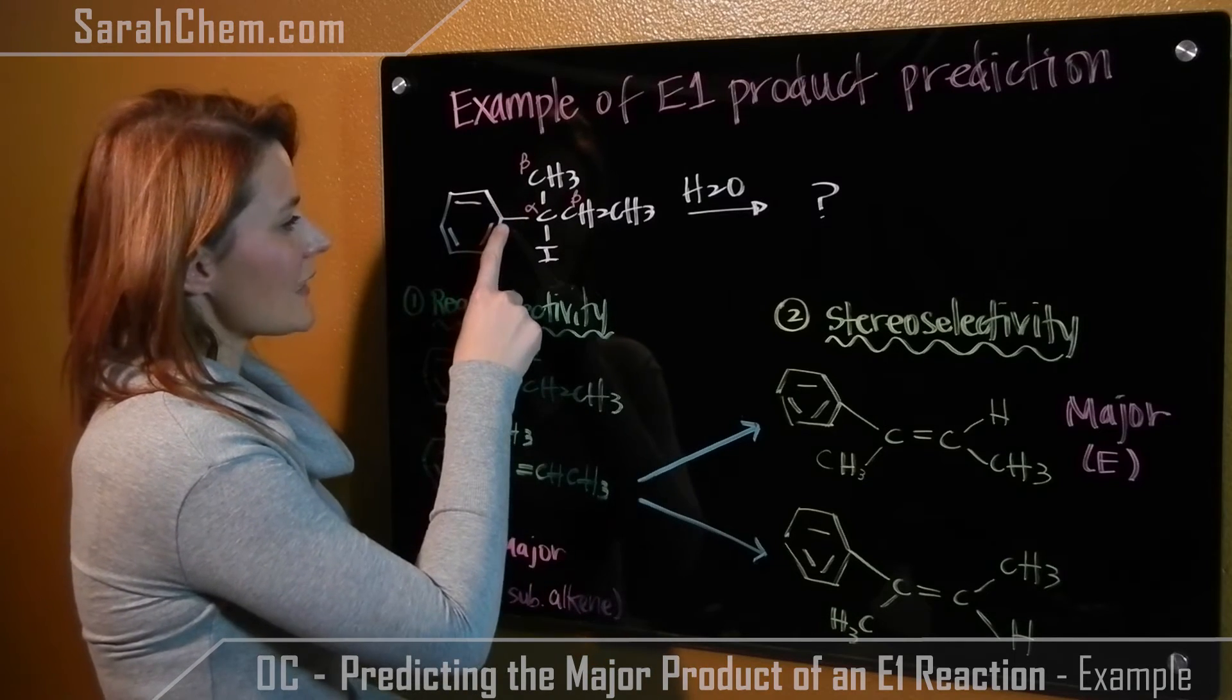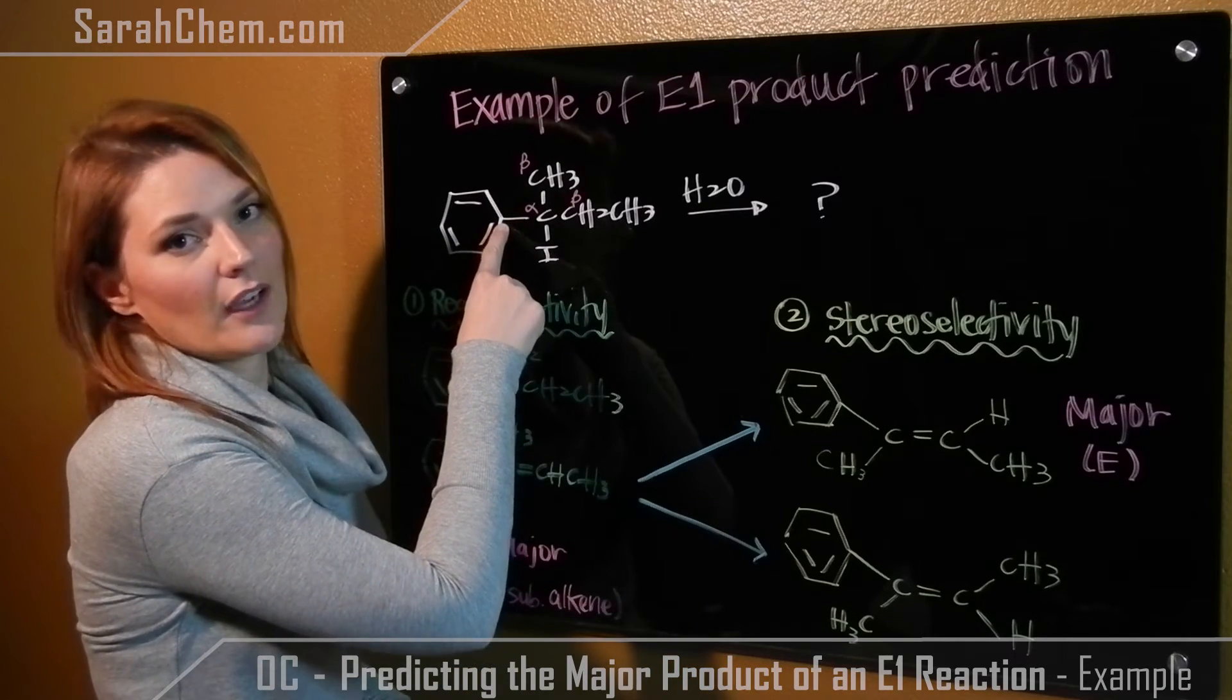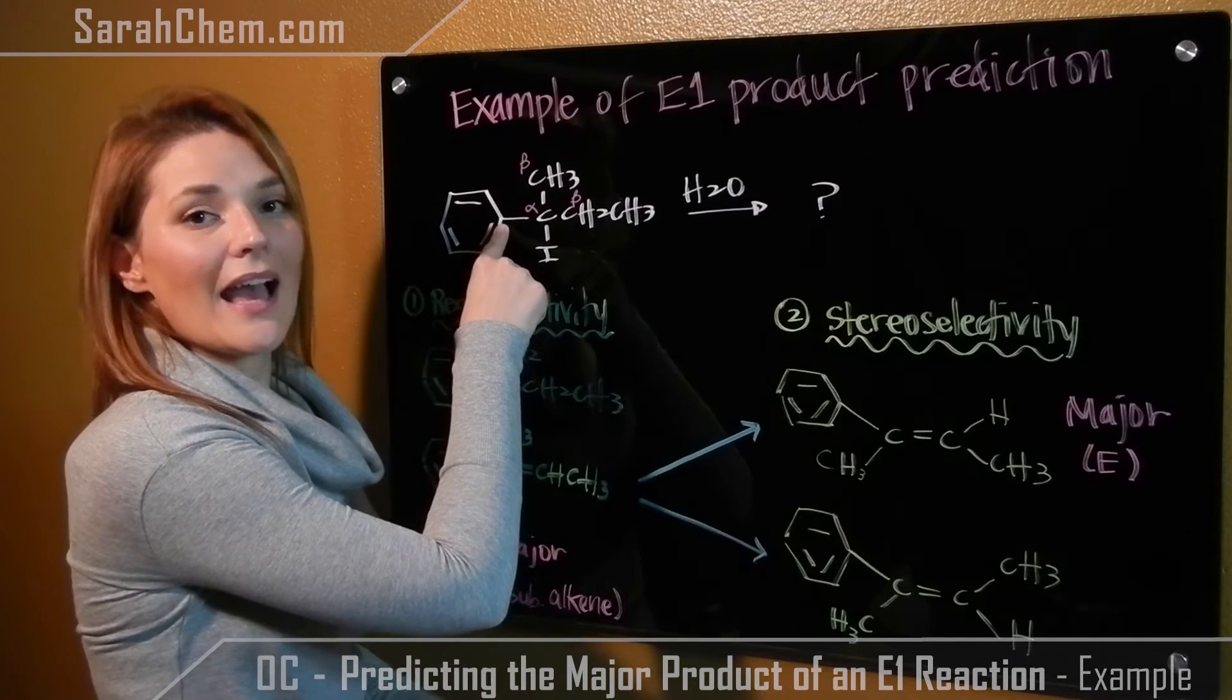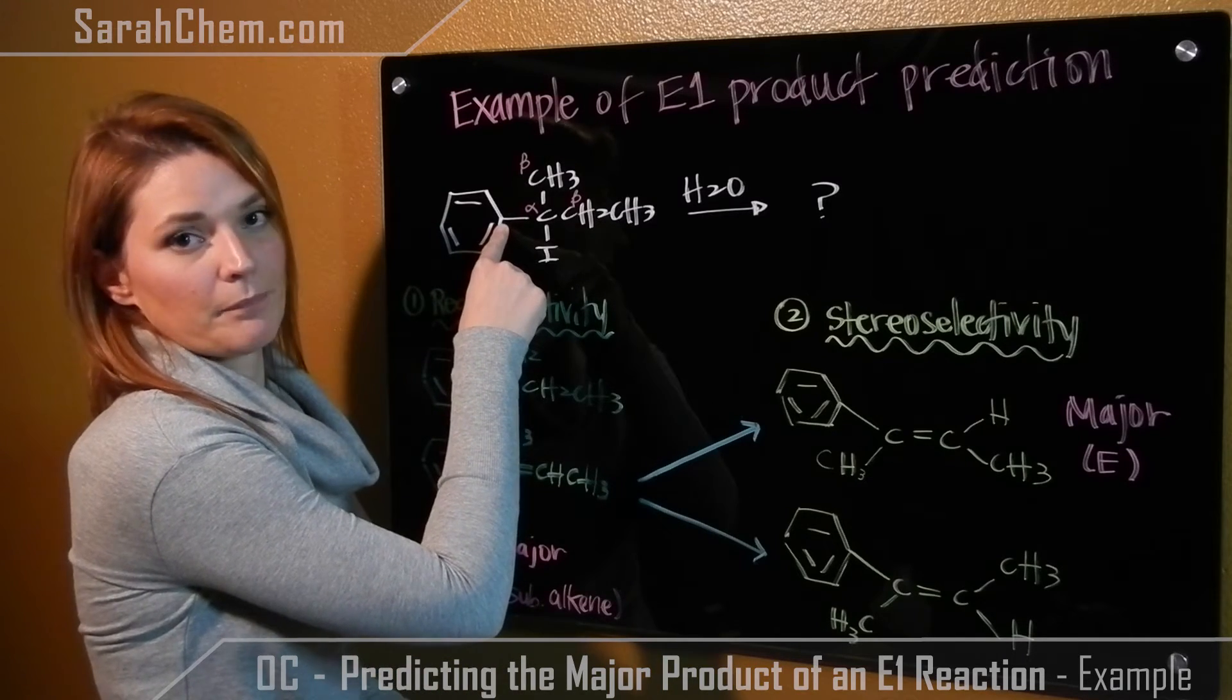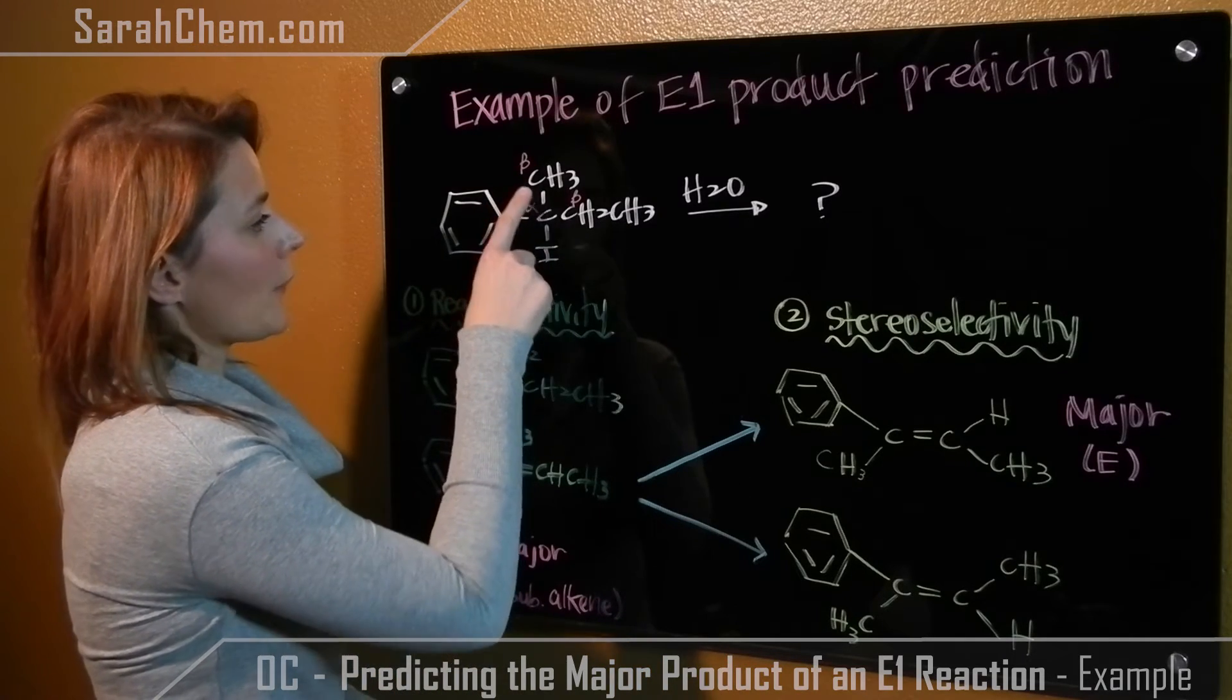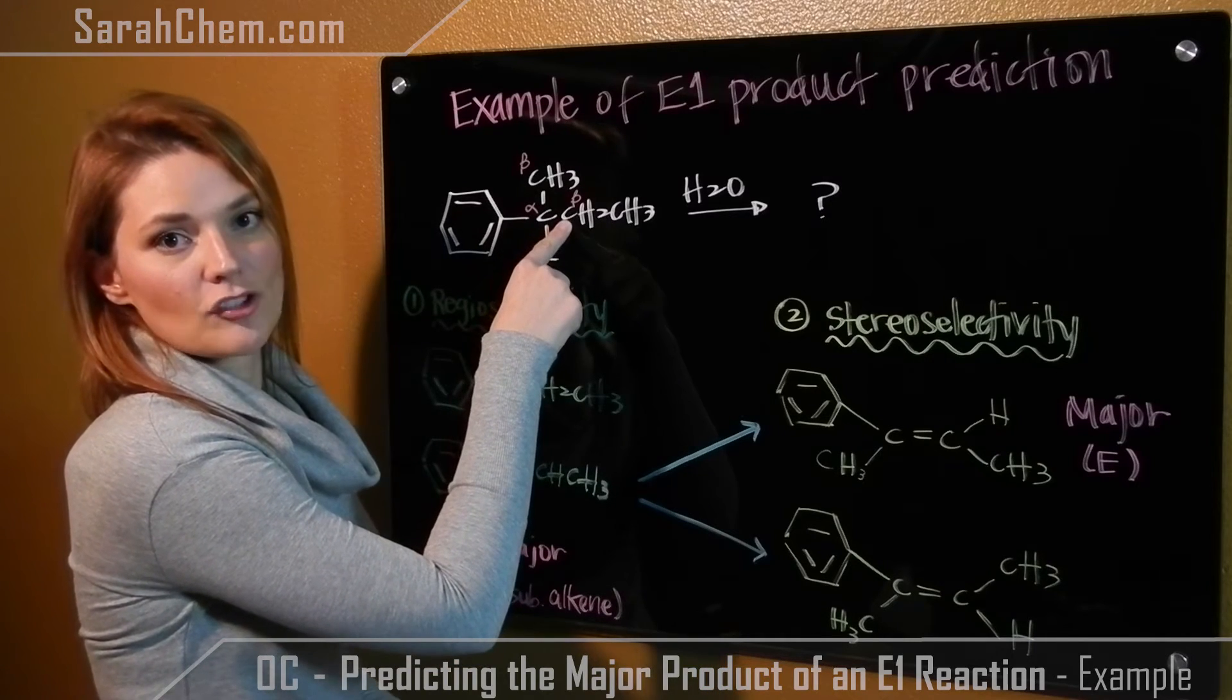I didn't list this one as beta because it doesn't have a hydrogen to spare, and the beta has to be able to lose a hydrogen. So these are the only two beta carbons that actually matter for us in this E1 reaction.